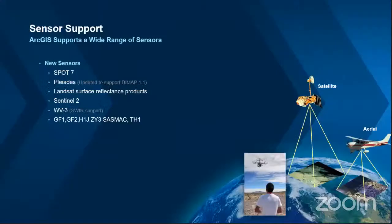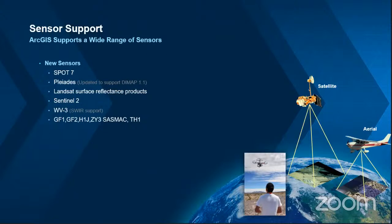There are various ways you can apply imagery in ArcGIS. The ArcGIS system can support a wide array of sensors — whether based on satellite images or aerial imagery. Some of the supported sensors include SPOT, Pleiades, Landsat, and Sentinel among others. You can also make use of aerial images collected by aircraft, and even drone imagery can be processed within the ArcGIS system.